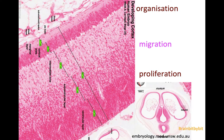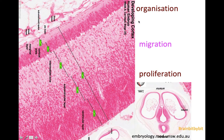Heterotopia is a malformation of cortical development. I've shown this image before of an atrial human embryo, where there is proliferation of stem cells in the ventricular zone, migration of the glutamate neurons arising from the ventricular zone along the radial glial cells in the subventricular layer and intermediate zone, and then organization of the neurons in the cortical plate — the precursor of the cortex. The GABAergic inhibitory neurons arise from the lateral ganglionic eminence and they migrate tangentially in the cortex.